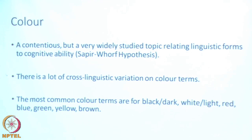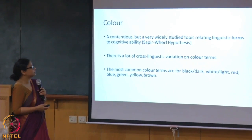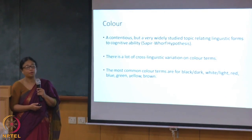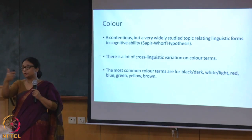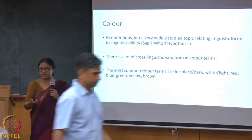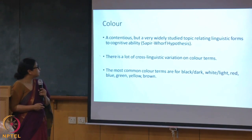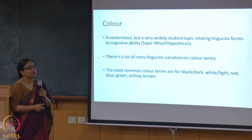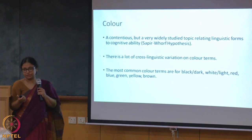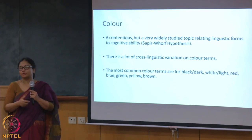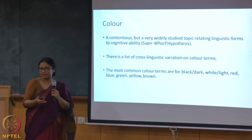It could be a completely deterministic approach — that your language determines what you can think or perceive — or a relativistic idea that your language helps in your thinking and perception. One consensus we have is that there's a lot of cross-linguistic variation on color terms. Some languages have as few as two color terms — black and white — some languages have 11, some have 18. The most common color terms found across languages are black or dark, white or light, red, blue, green, yellow, and brown.